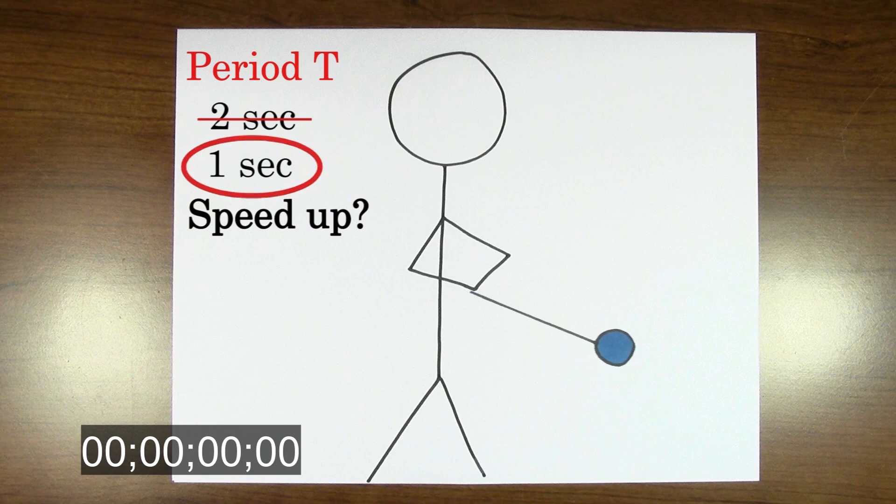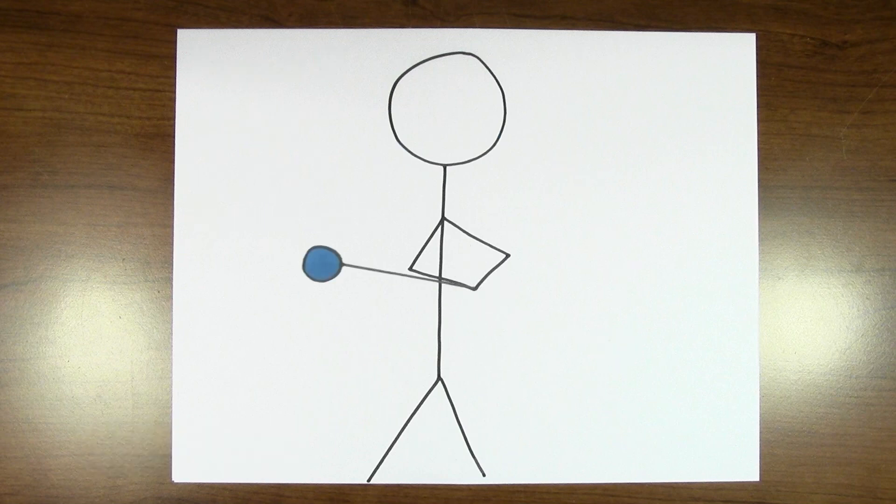If we decrease the period to one second, the time it takes to complete one circle is now only one second. This means it takes less time for the yo-yo to go in a circle, which means it's moving faster.